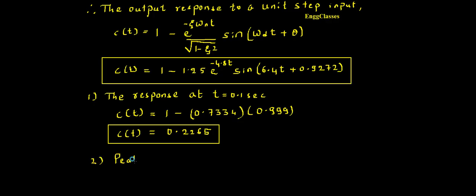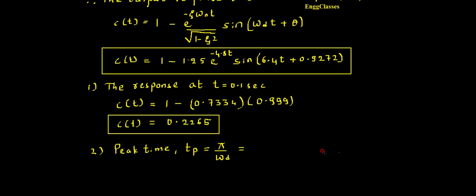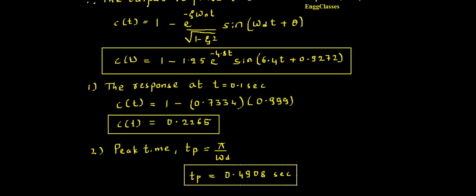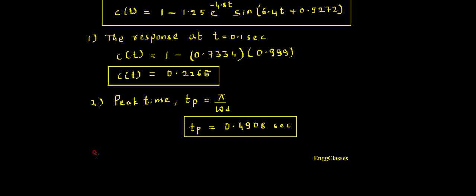The peak time tp is given by the formula tp = π / ωd. Substituting ωd = 6.4 radians per second, tp = π / 6.4, which equals 0.4908 seconds.